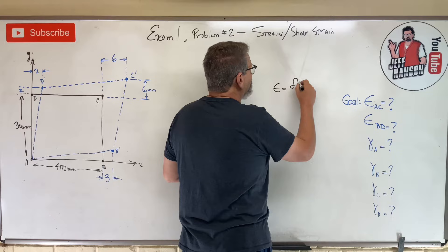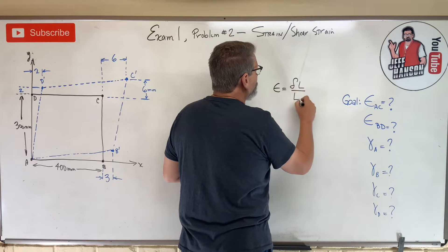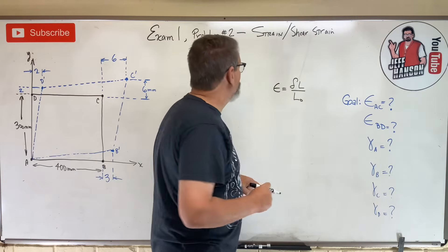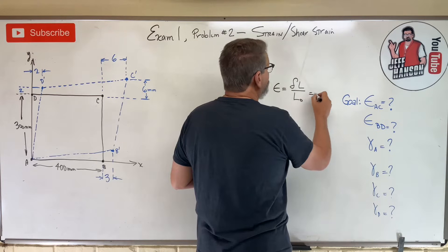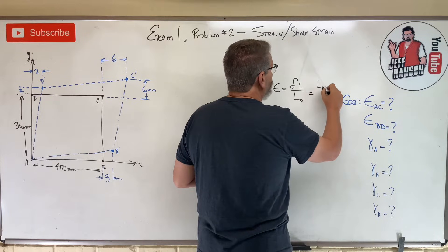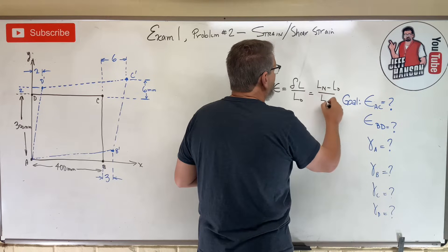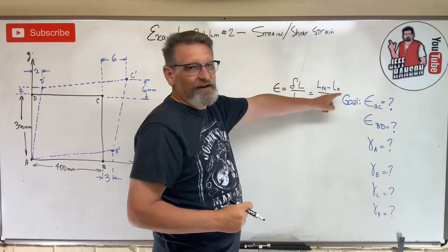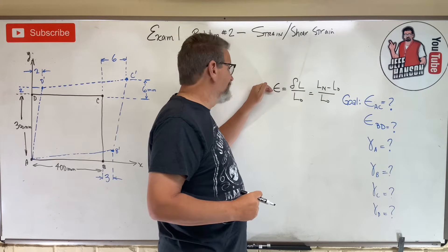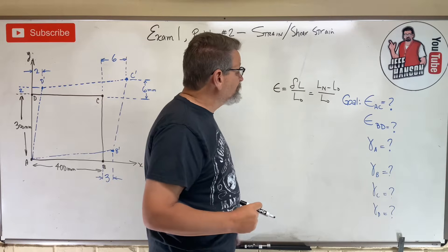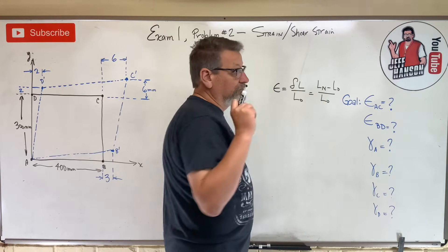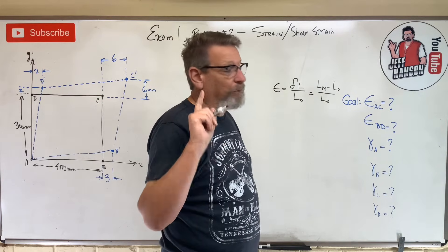Strain is delta-L divided by the original length — the change in length divided by the original length. You can also write it as length-new minus length-original, divided by length-original. That gives you the delta-L, and that gives you strain. Then shear strain — that's a change in angle.